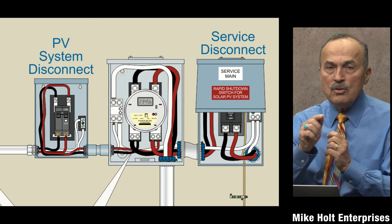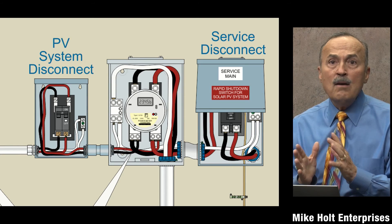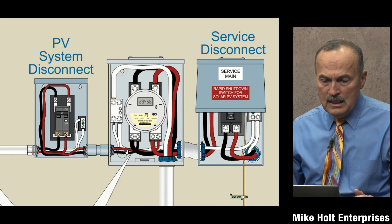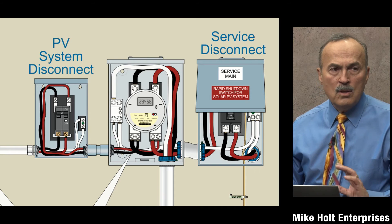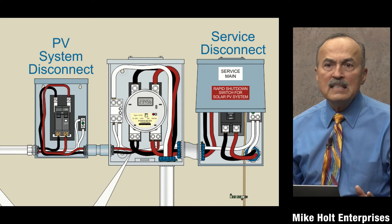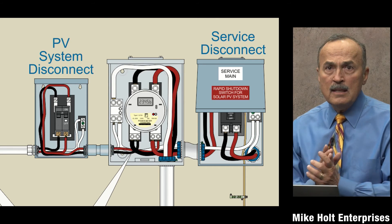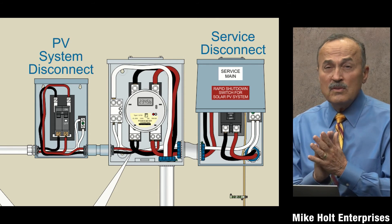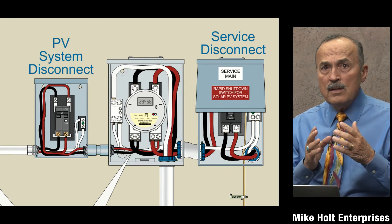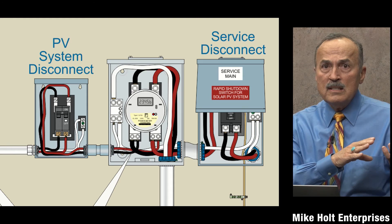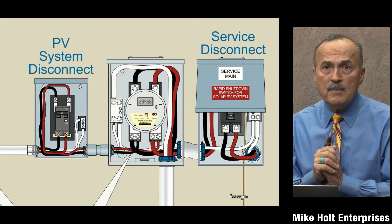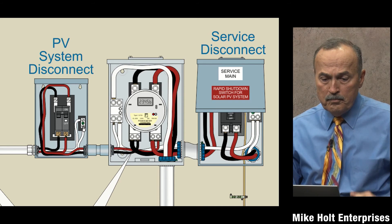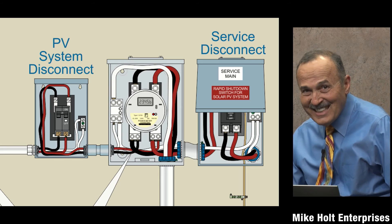For the supply side connection: bring a neutral to the supply side disconnecting means and bond that neutral to the enclosure. No grounding electrode is required for the PV system disconnect because that neutral connects back to the service neutral, which is already grounded. This aligns with 690.47(A), which states that the equipment grounding conductor for the PV system can serve the grounding means, and no additional grounding connection is required.